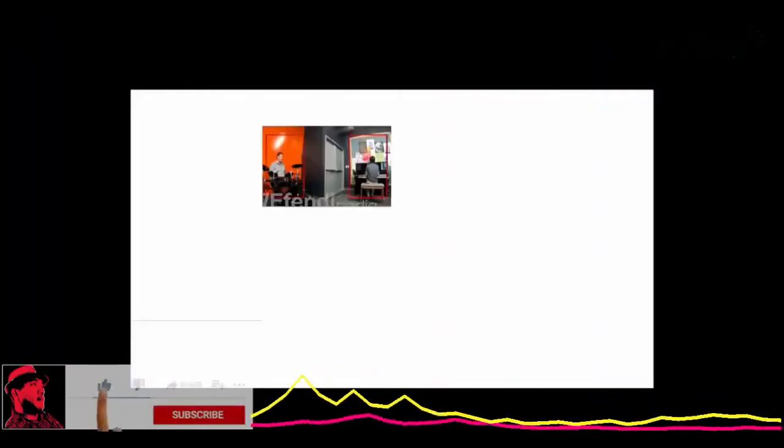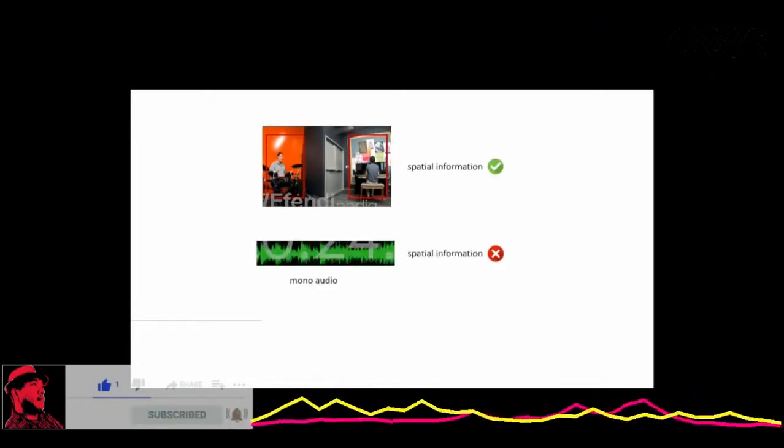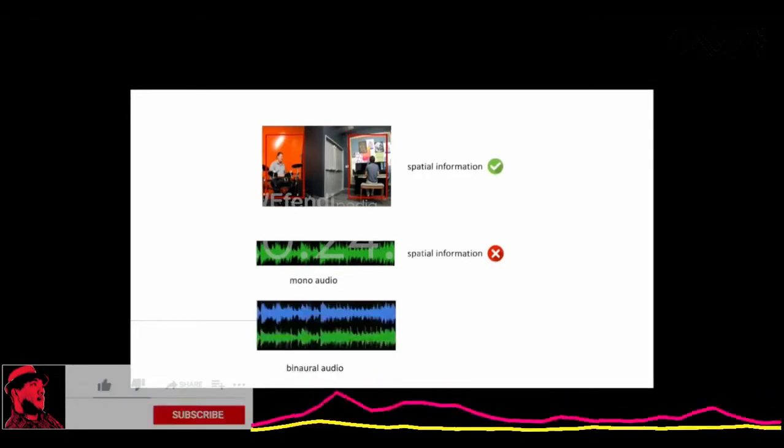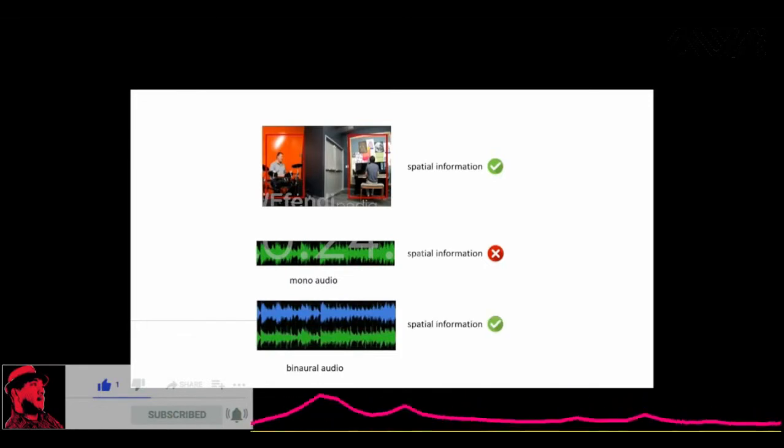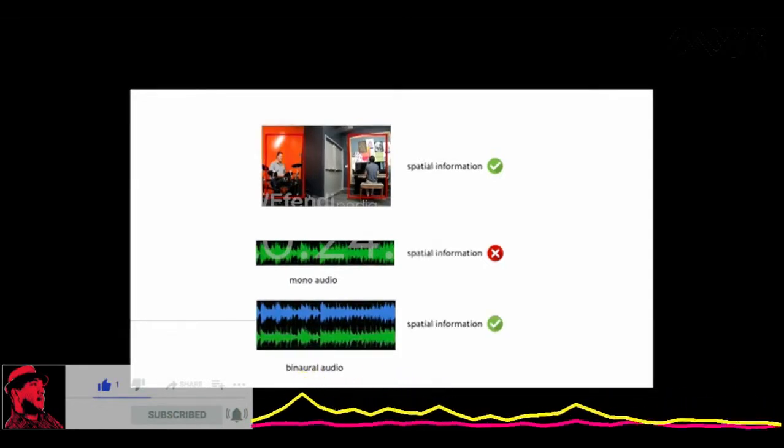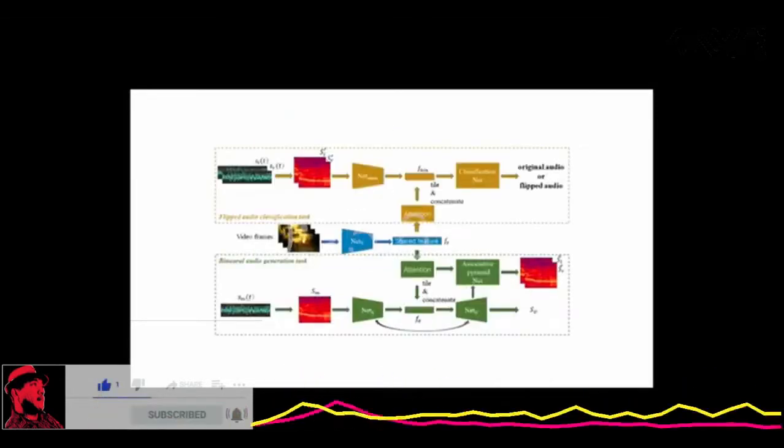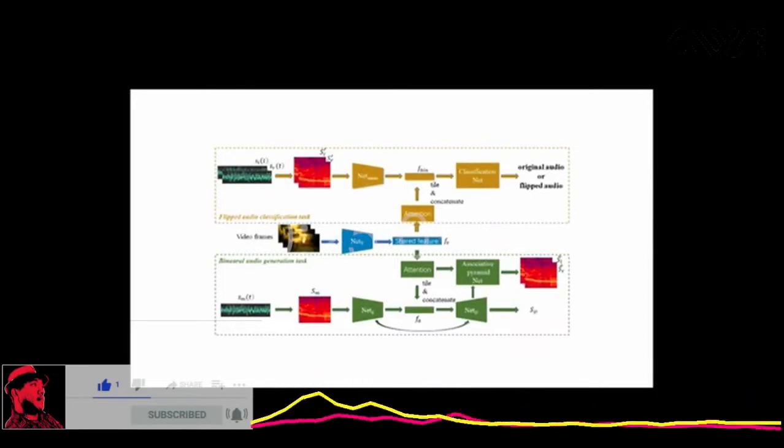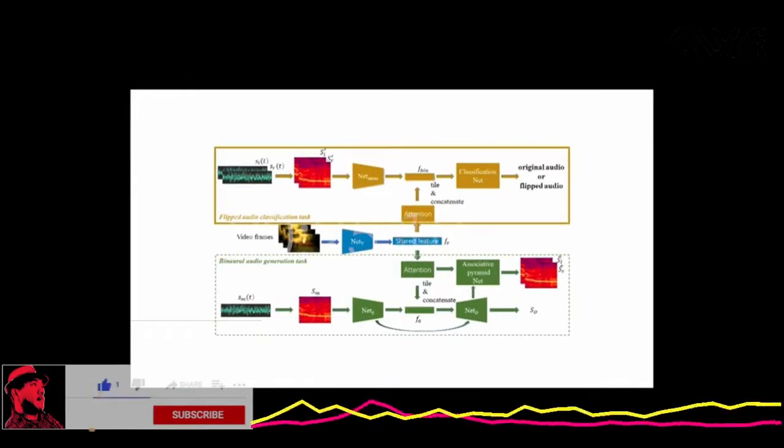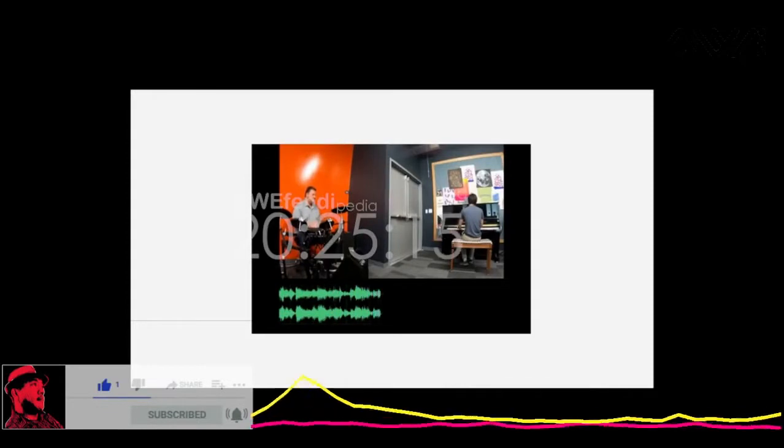We can infer spatial information easily from video frames. However, we cannot infer it from mono audio. Therefore, to enhance the user experience, it's a good choice to convert the mono audio to binaural audio. Then we can judge the sound source according to the difference between the two channels. We present a learning-based approach for generating binaural audio using multi-task learning, which combines two related tasks: the binaural audio generation task and the flipped audio classification task. Our approach can generate comparable or better results without introducing additional datasets.